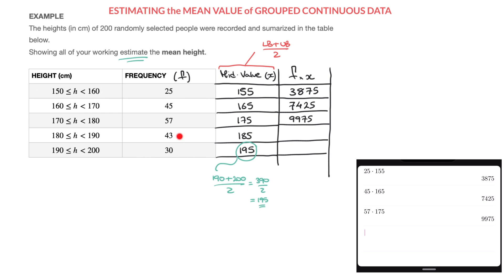For the next cell, I have 43 times 185. That's 43 times 185, and that's equal to 7955.